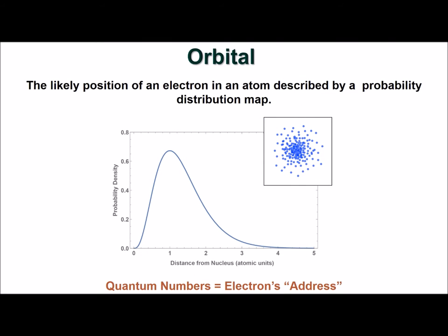In this figure, we can see that the probability density of an electron decreases as the distance from the nucleus increases. This means the likelihood of finding an electron is highest closer to the nucleus.